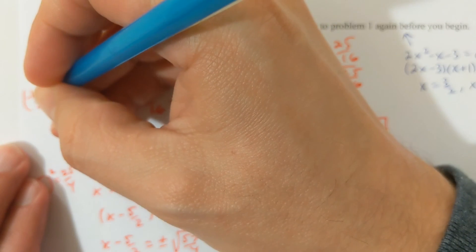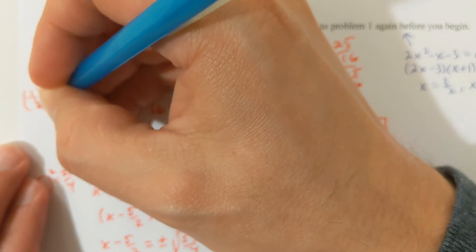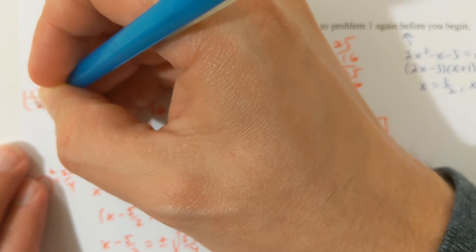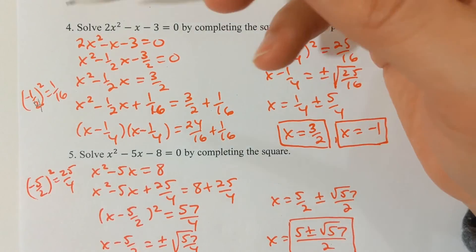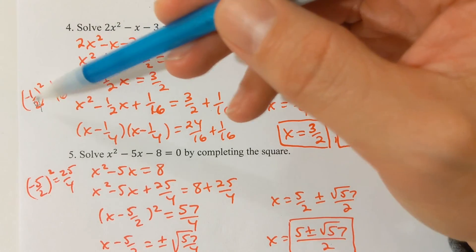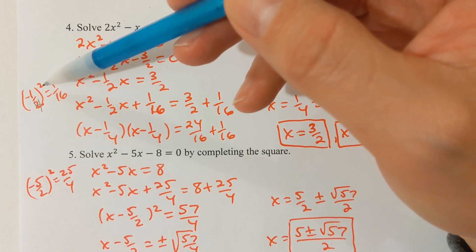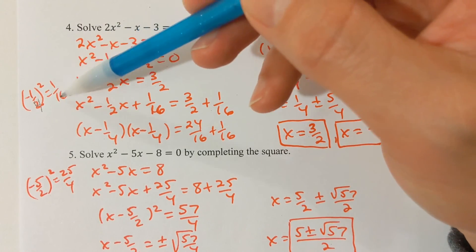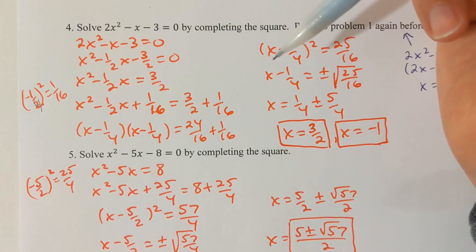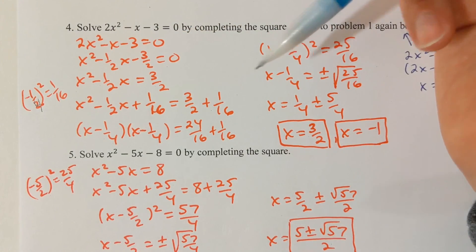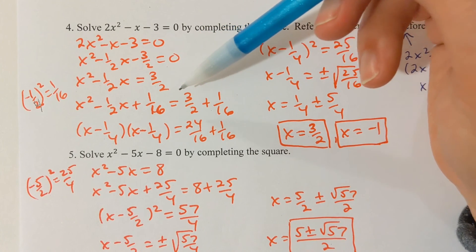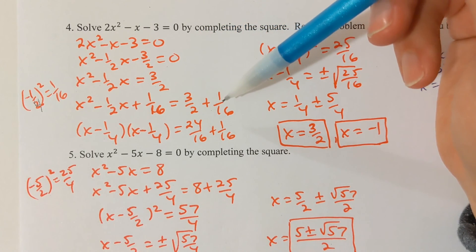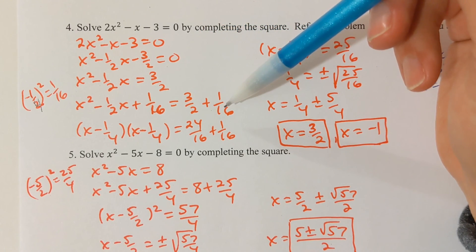This should be negative 1/4 squared. Negative 1/4 squared is 1/16. So 1/16 is going to be the number that I'll add to both sides on the next line.